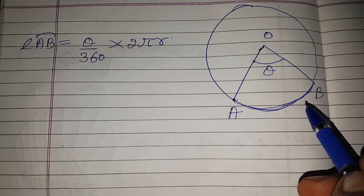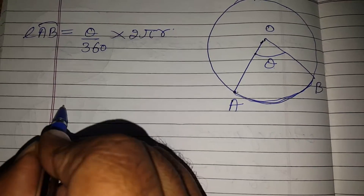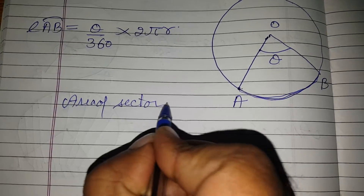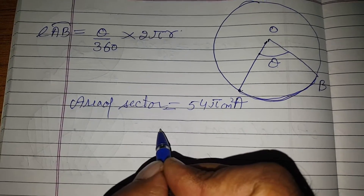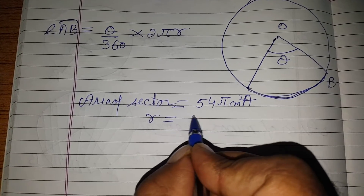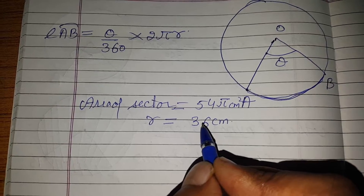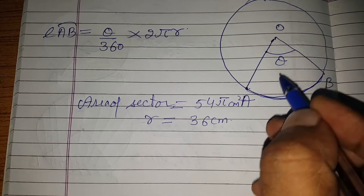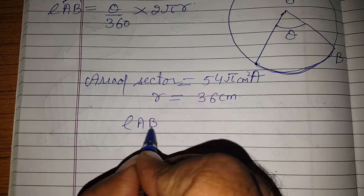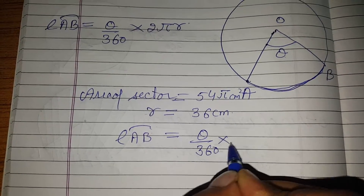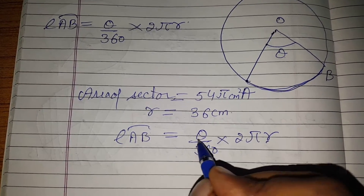Now let us take an example. Suppose the area of a sector is 54 pi centimeter square and the radius is 36 cm. We have to find the length of the corresponding arc of the sector. To find the length, we use the formula: length equals theta by 360 into 2 pi r. But we do not have theta, so we must first find theta from the area of the sector.